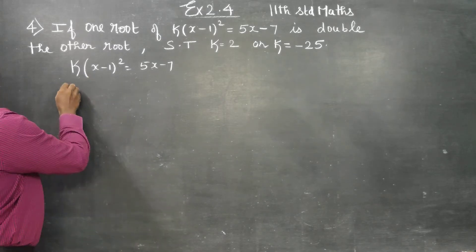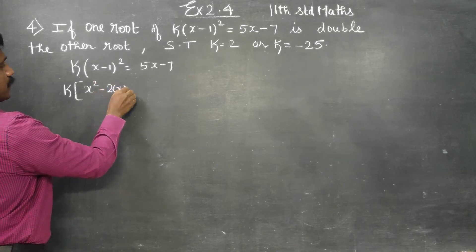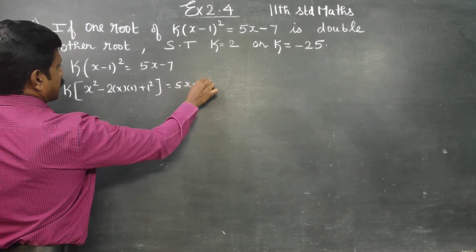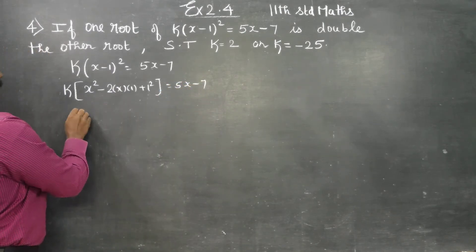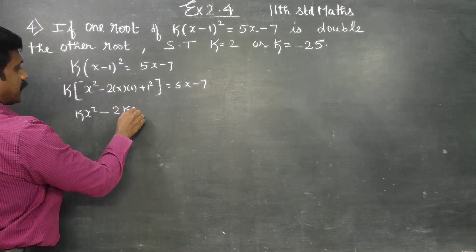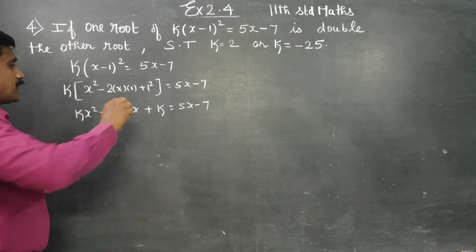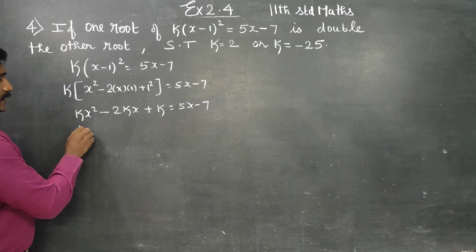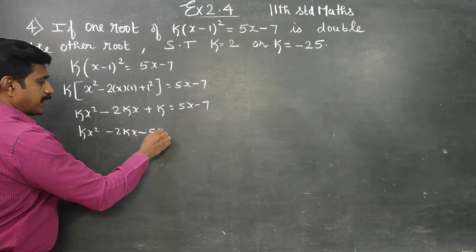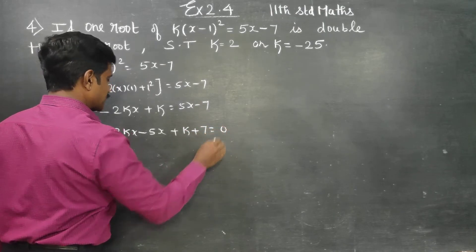I will just simplify this. k into a square minus 2ab plus b square is equal to 5x minus 7. Multiplying by k: kx square minus 2kx plus k is equal to 5x minus 7, then kx square minus 2kx minus 5x plus k minus 7 plus 7 is equal to 0.